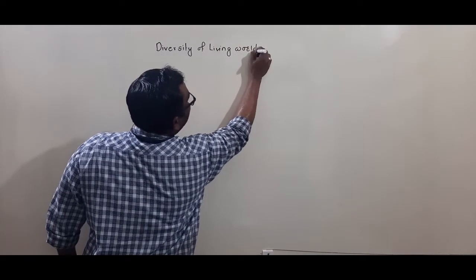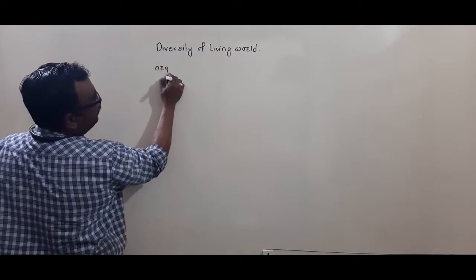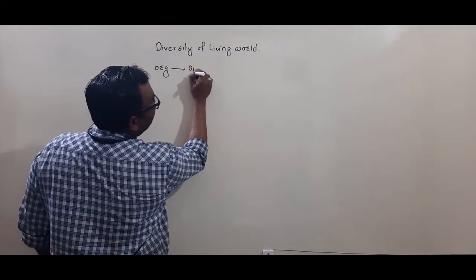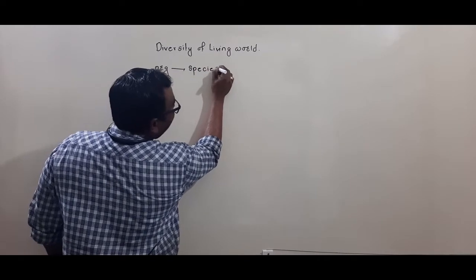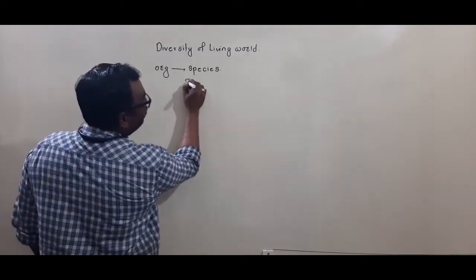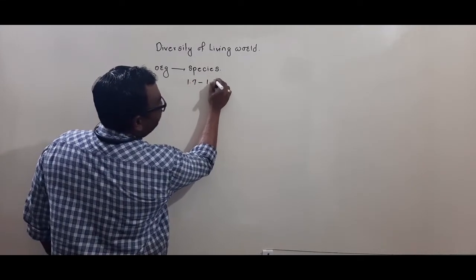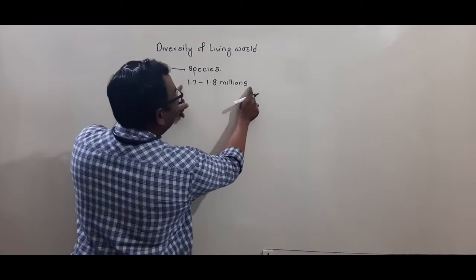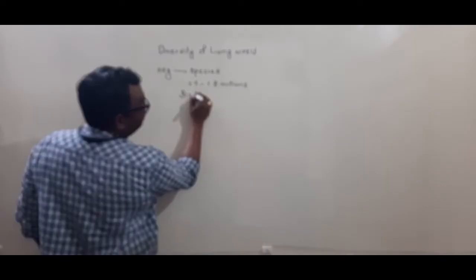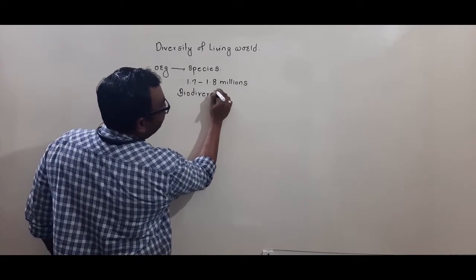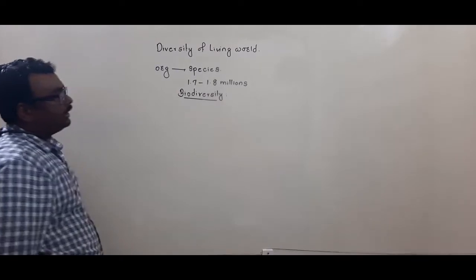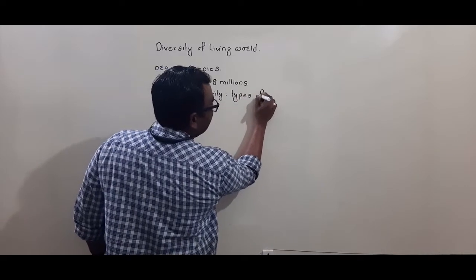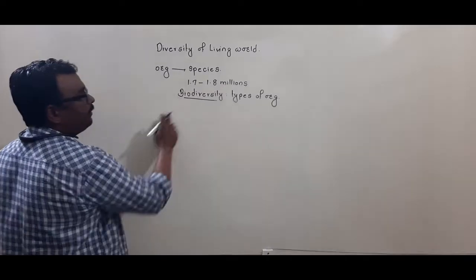When you talk about diversity of the living world, each organism we see — dogs, cats, whatever organism we see — represents a species. If you calculate the number of species we know, that number goes to about 1.7 to 1.8 million organisms or species. This number of species we know refers to biodiversity. Biodiversity is the types of organisms that are present on this universe.